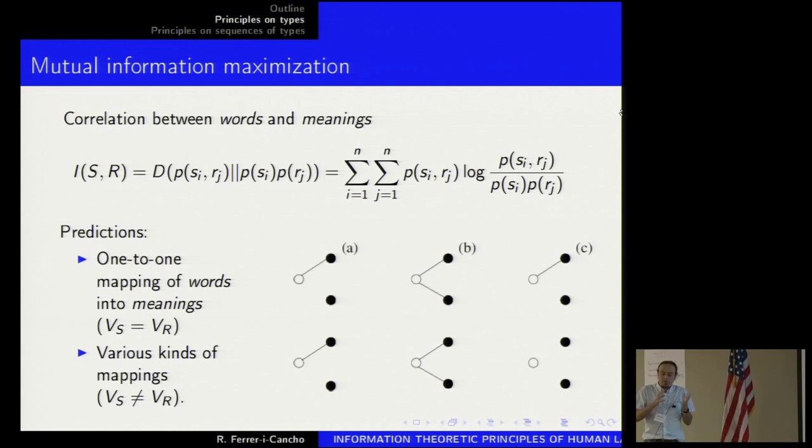This maximization principle makes some useful predictions. One is, if you have the same number of words and meanings, then the prediction is that you're going to have a one-to-one mapping between words and meanings. If you have a different number, then it becomes less intuitive.